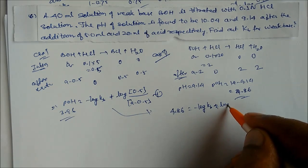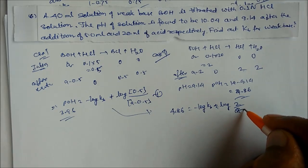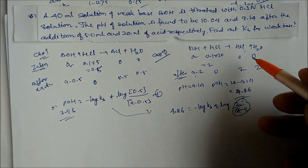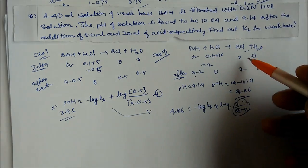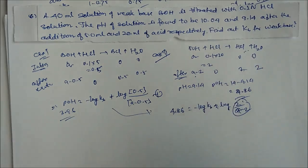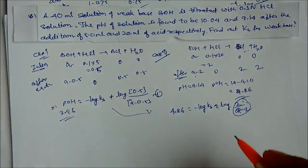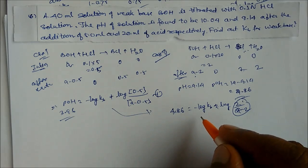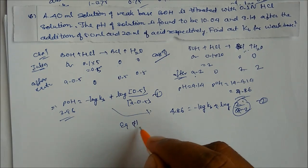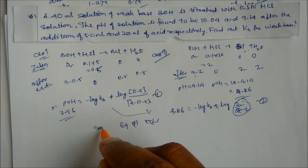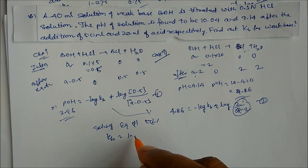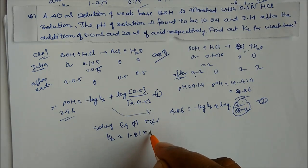Solving equations 1 and 2 simultaneously, we get Kb = 1.81×10⁻⁵. This is the answer for the dissociation constant of the weak base.